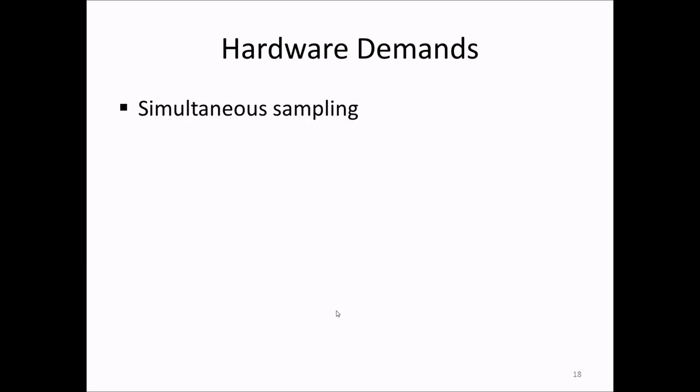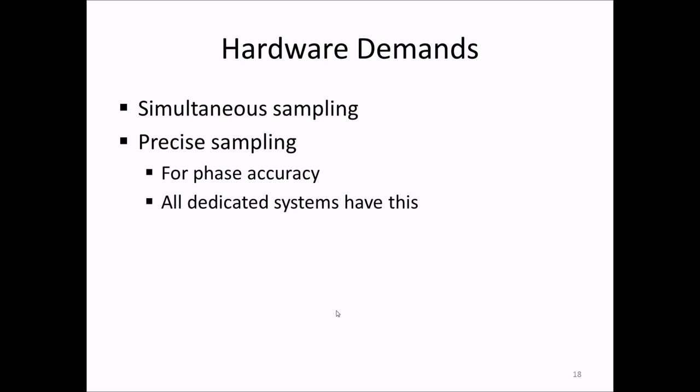Finally, some words about the sampling process. We need precise sampling both in terms of simultaneous sampling instances and with constant time differences between the samples, as we said before. The first is necessary for cross-channel phase accuracy, and the second to get spectra with high dynamic range. All dedicated noise and vibration systems are good at this.